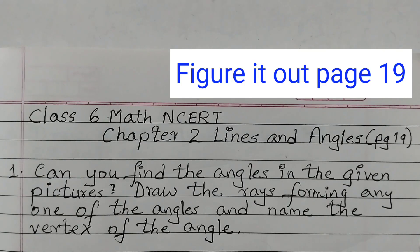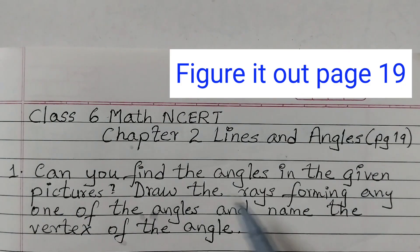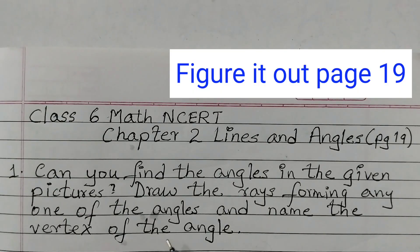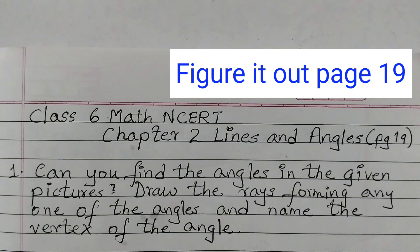Hello students, welcome back to Rosiematt's class. In this video we are going to solve question number 1 and question number 2 given on page number 19 and 20. The first question is: can you find the angles in the given pictures, draw the rays forming any one of the angles, and name the vertex of the angle. There are 4 pictures given and you need to find out the angles in the given picture.